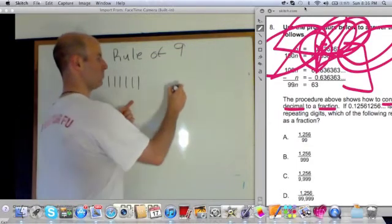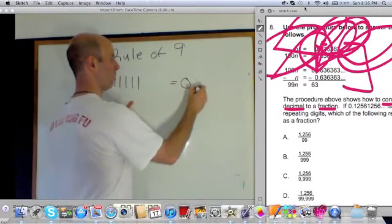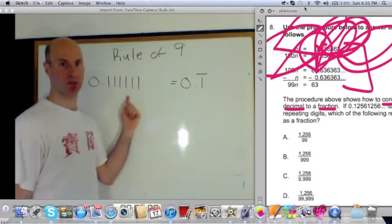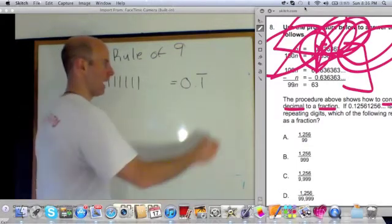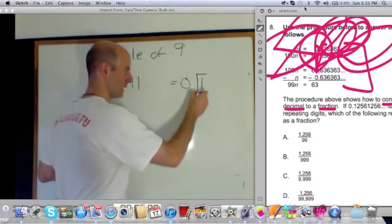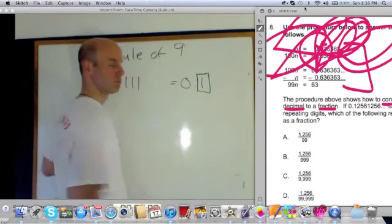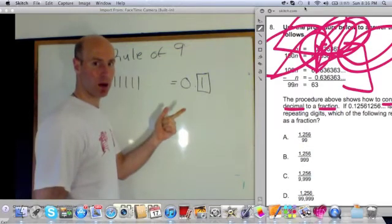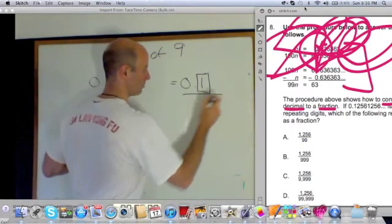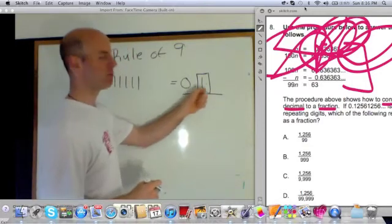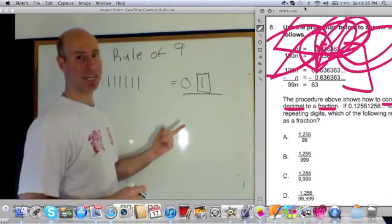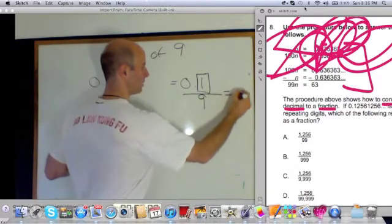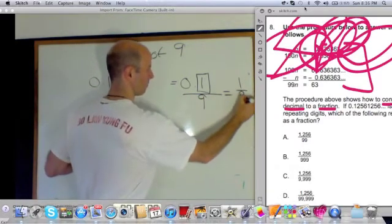So I could rewrite this as 0.1 repeating. That's another way to express this repeating decimal. I put the portion that's repeating in a box. So I identify the portion that's repeating, I put it in a box. And the third step is I do a dividing sign. I ask myself, how many digits in that box? Right now there's one. I put one nine. And I get this fraction, one over nine.